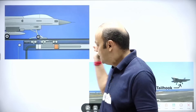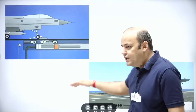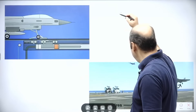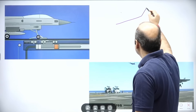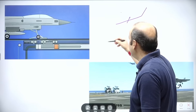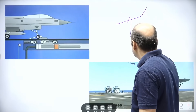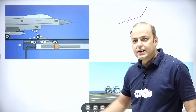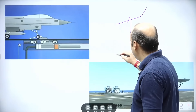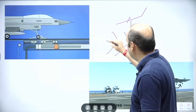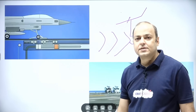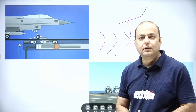Now, how do fighter aircraft land on a warship? Suppose this is a fighter jet coming in to land. There is a tail hook attached to the fighter aircraft, and 4 to 5 wires are placed on the warship.